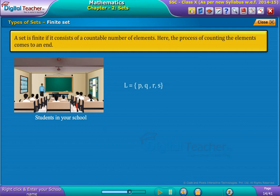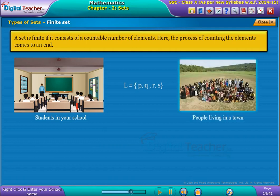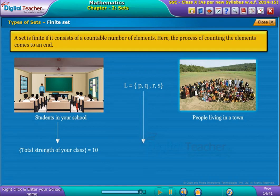Set of people living in a town, etc. All the above examples are countable. In the first example, you can easily say total strength of your class is 10, and in the second example we can see that number of elements in L are four.